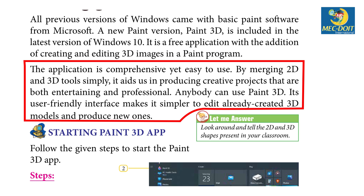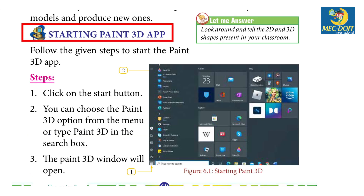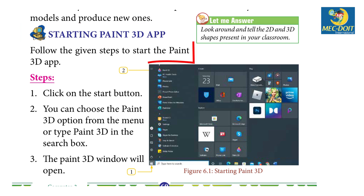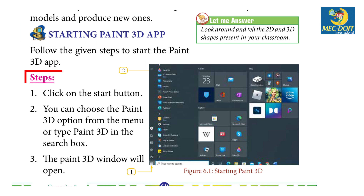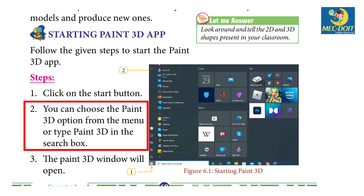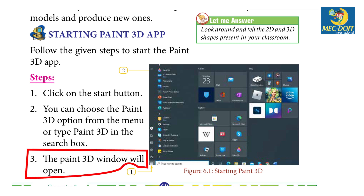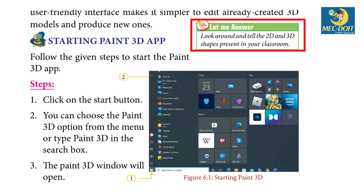Starting the Paint 3D app: Follow the given steps. Step 1 — Click on the Start button. Step 2 — You can choose the Paint 3D option from the menu, or type Paint 3D in the search box. Step 3 — The Paint 3D window will open.